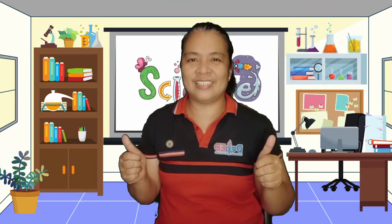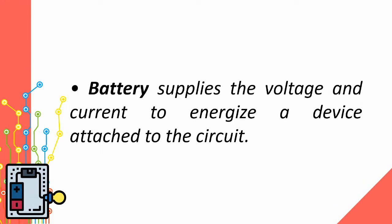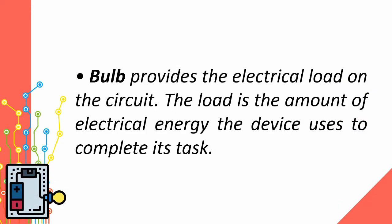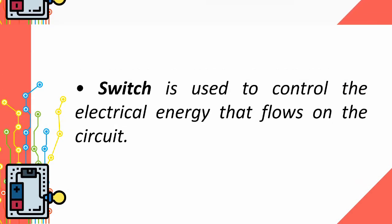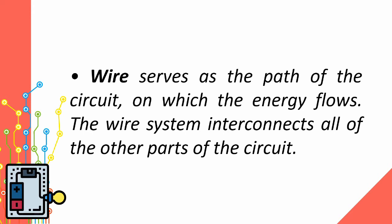What an awesome job, kids! Let's see what science ideas you have learned. An electric circuit is a path that allows electricity to flow. A battery supplies the voltage and current to energize a device attached to the circuit. A bulb provides the electrical load on the circuit — the load is the amount of electrical energy the device uses to complete its task. A switch is used to control the electrical energy that flows in the circuit. A wire serves as the path of the circuit on which the energy flows, and the wire system interconnects all the other parts of the circuit.